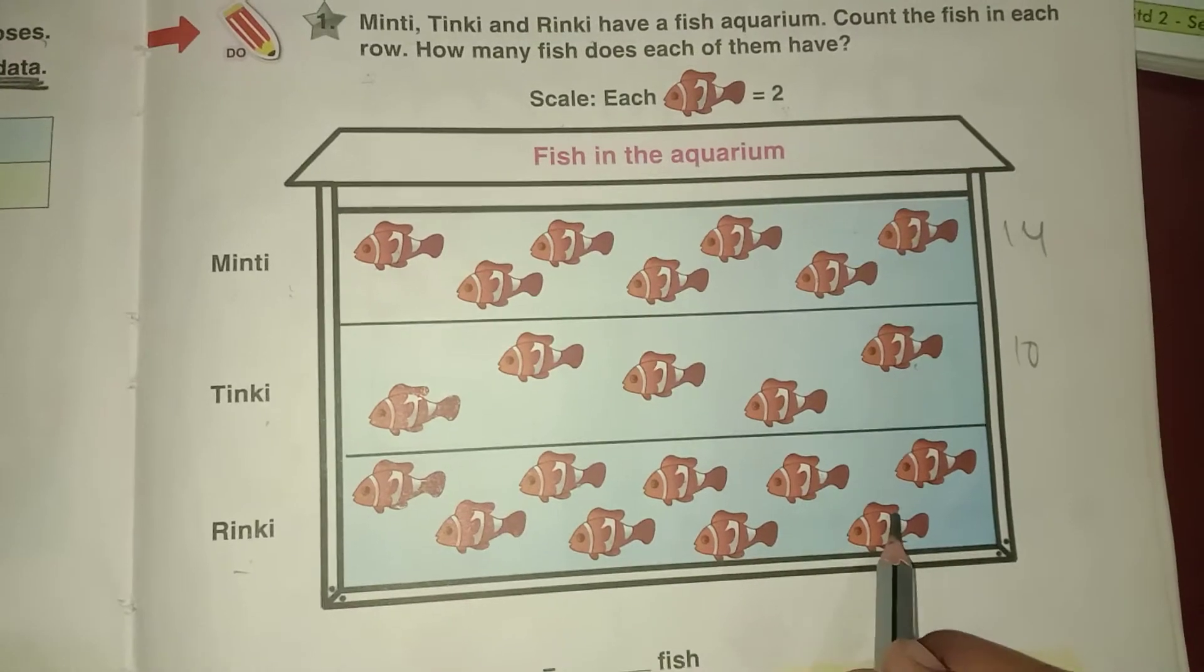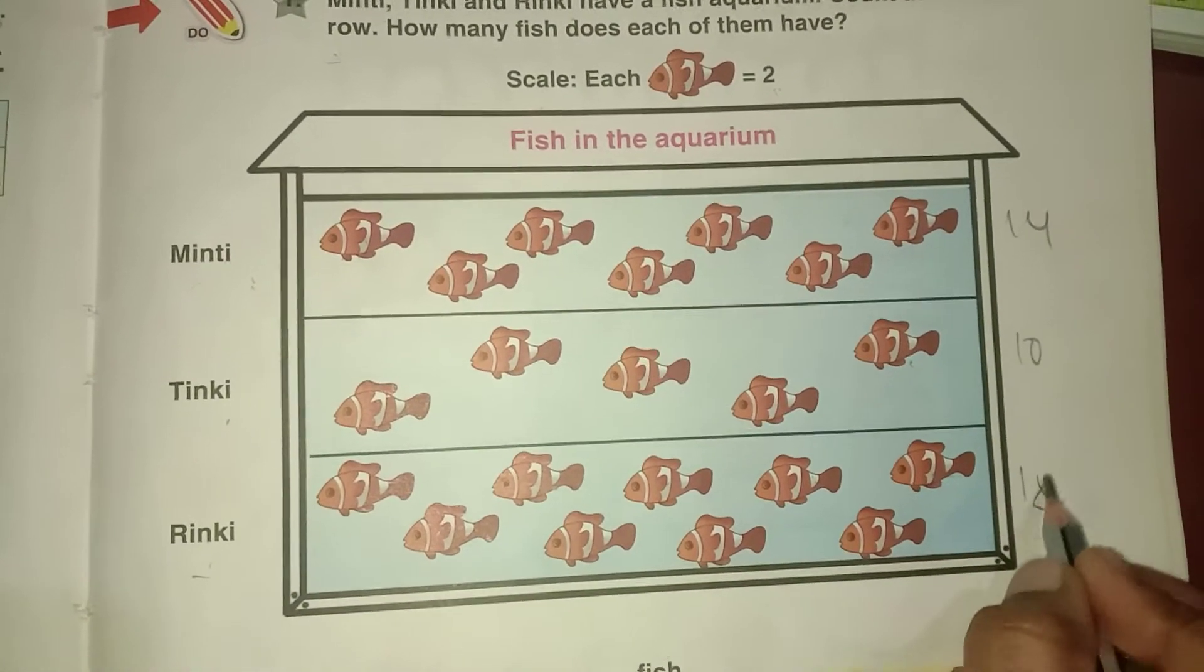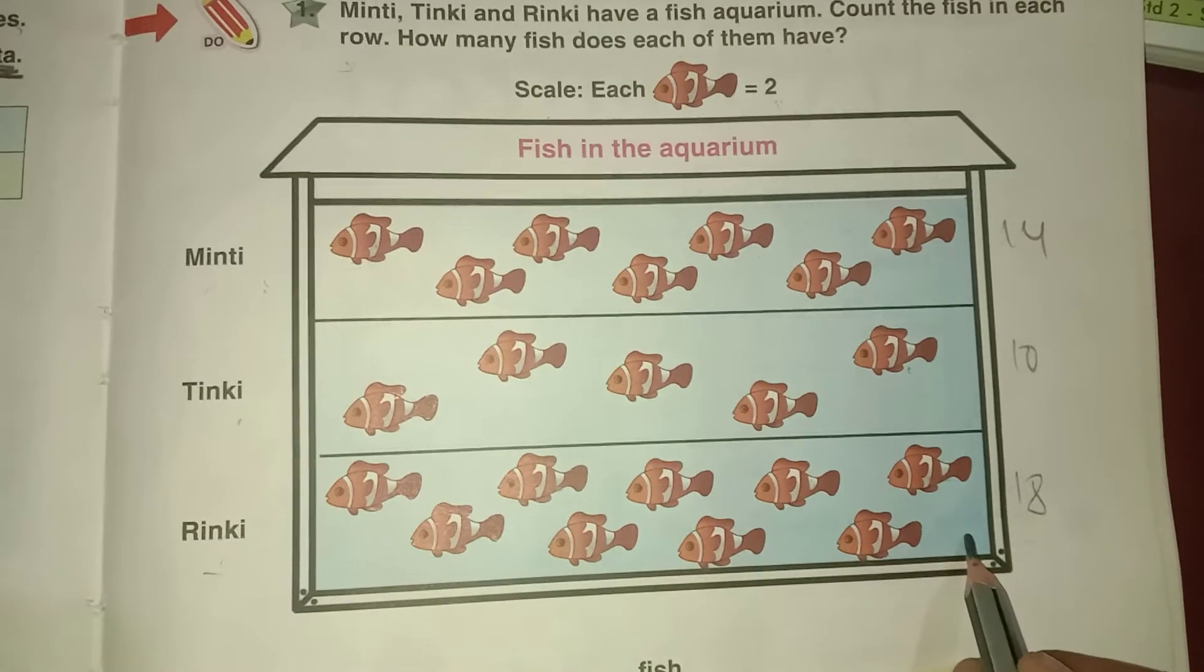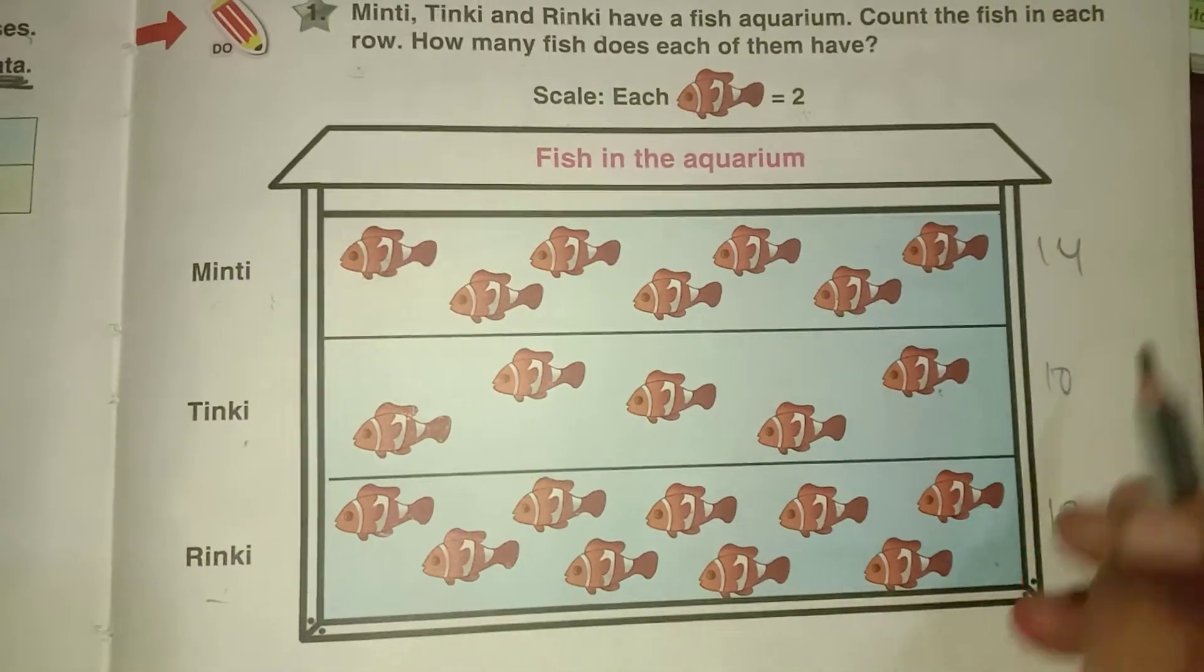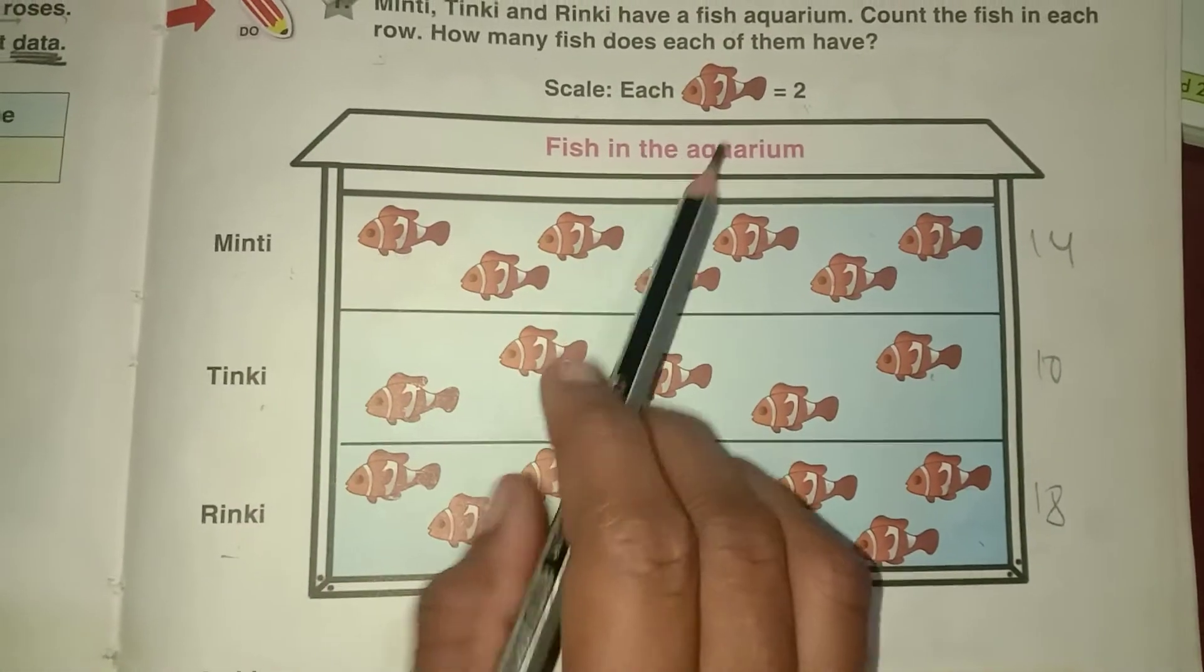12 plus 2 is 14, 14 plus 2 is 16, 16 plus 2 is 18. Rinky had 18 fish, Tinky had 10 fish, Minty had 14 fish. One fish is equal to two.